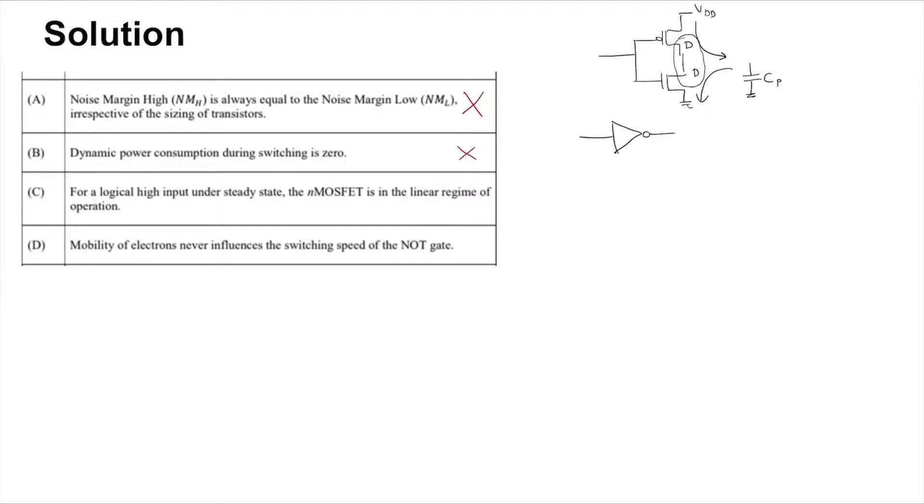And in option D, mobility of electrons never influences the switching speed of the NOT gate. Well that's clearly not true, because the mobility of the electron affects the strength or the current of the bottom transistor.